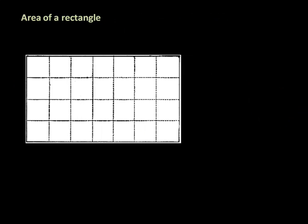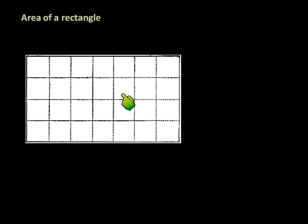So the area of a rectangle — this shows you what I mean by square units. If I were to count all of these units individually, I get 28. So the area of this rectangle would be 28 square units. We can use U for units; typically we'd use inches or centimeters, but we'll just use units.